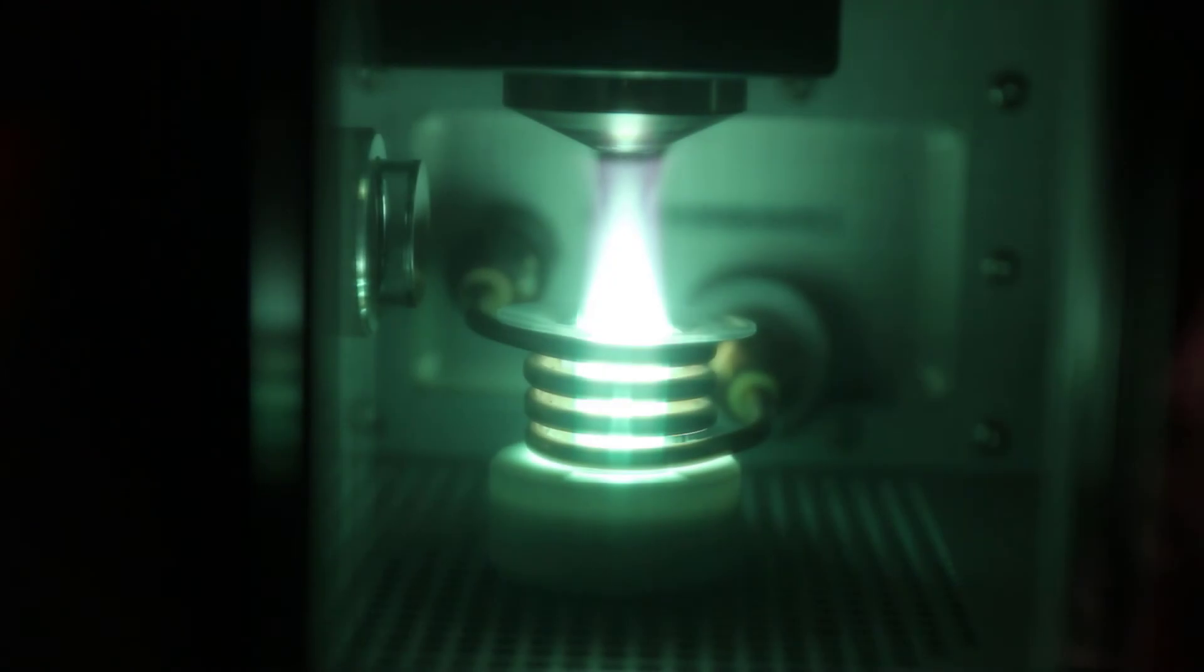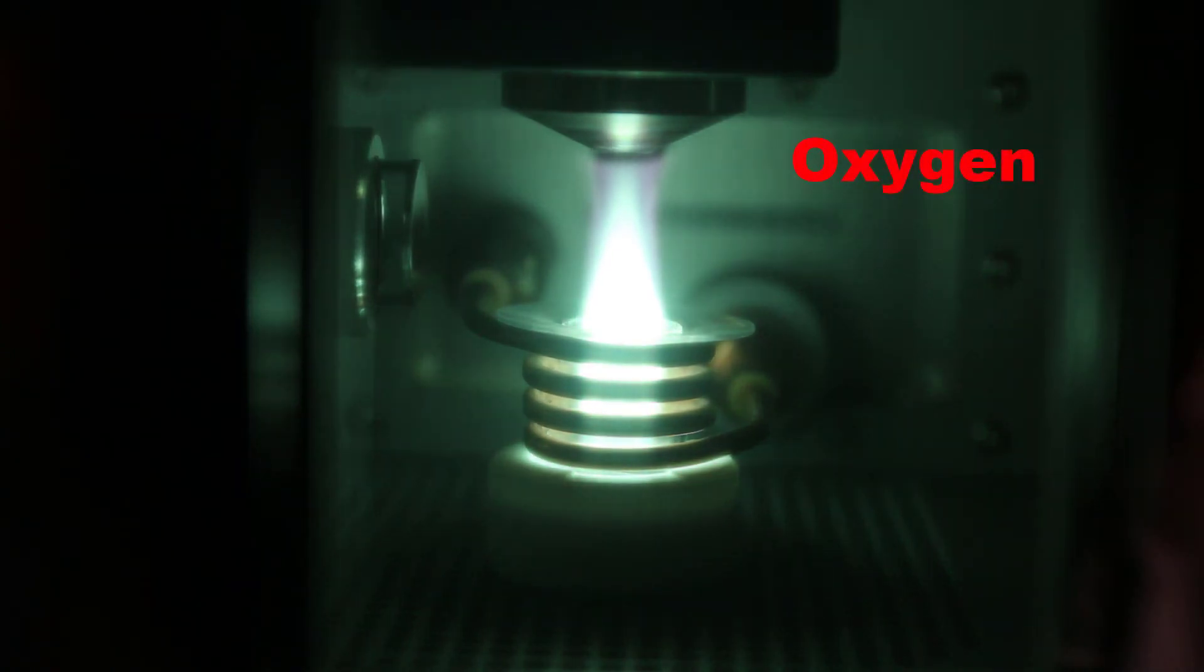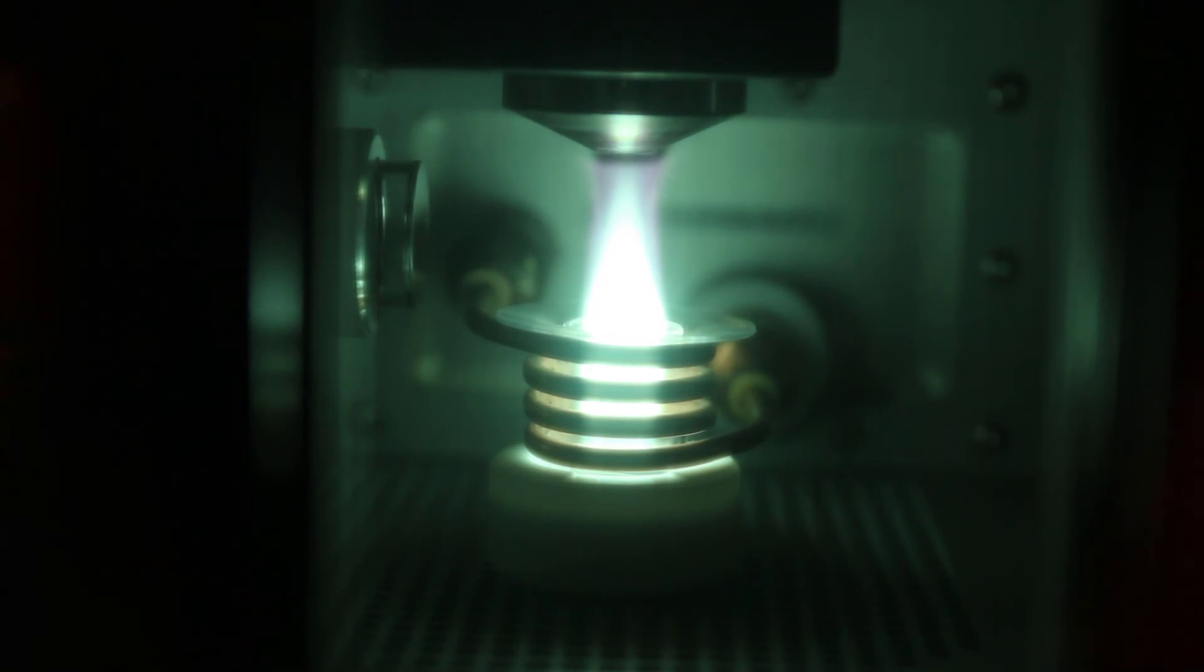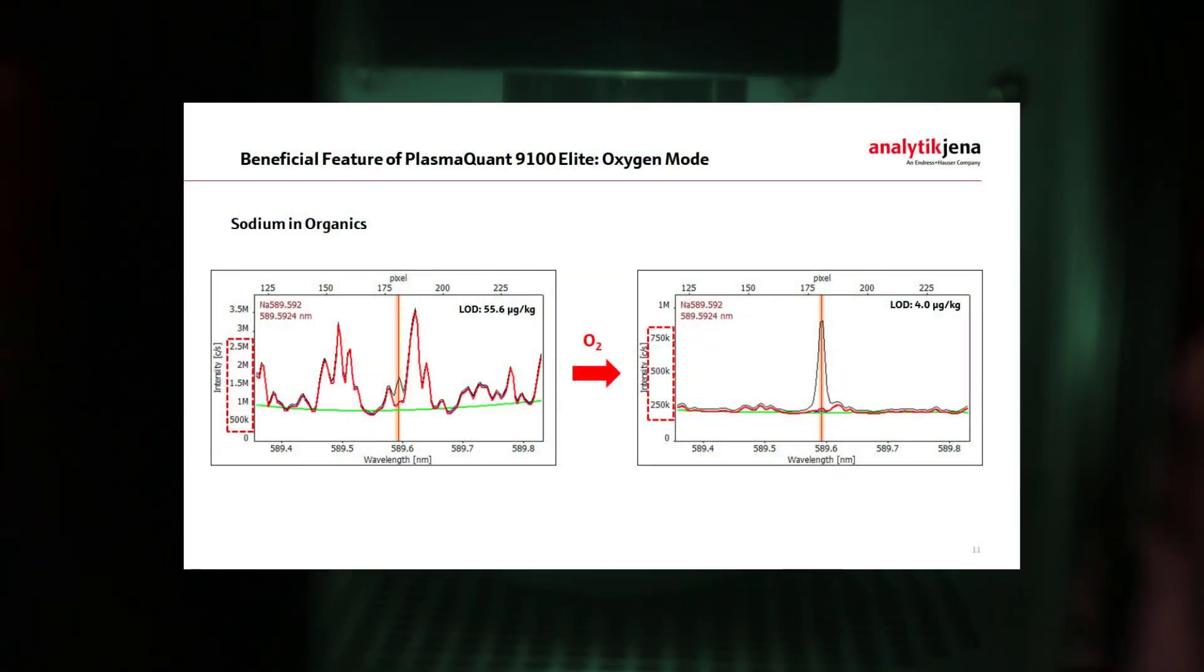Even if not necessary, the PlasmaQuant 9100 is able to utilize an oxygen plasma mode, but not primarily to avoid carbon deposits, but to reduce carbon-based spectral interferences and background signals, especially in the visible range for elements like sodium or potassium, which overall provides a higher signal-to-noise ratio and ends up in lower limits of detection for such analytes.